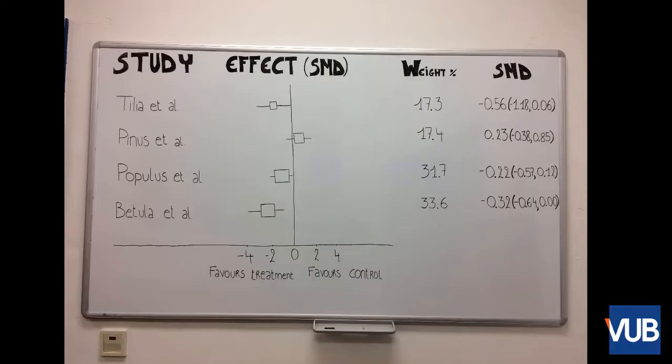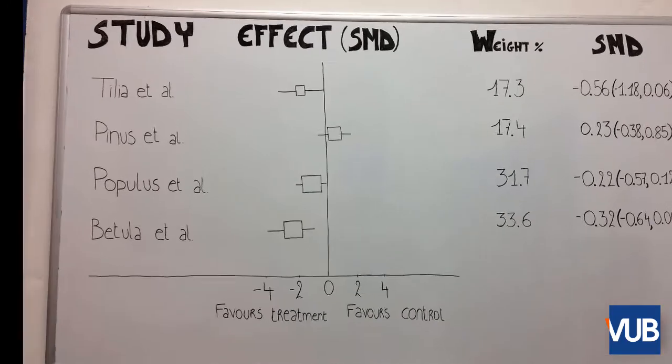A forest plot consists of different elements. When we look at the whole, we see all the studies included in the meta-analysis listed up under each other on the left side. Next, we will discuss the visual aspects of the forest plot.